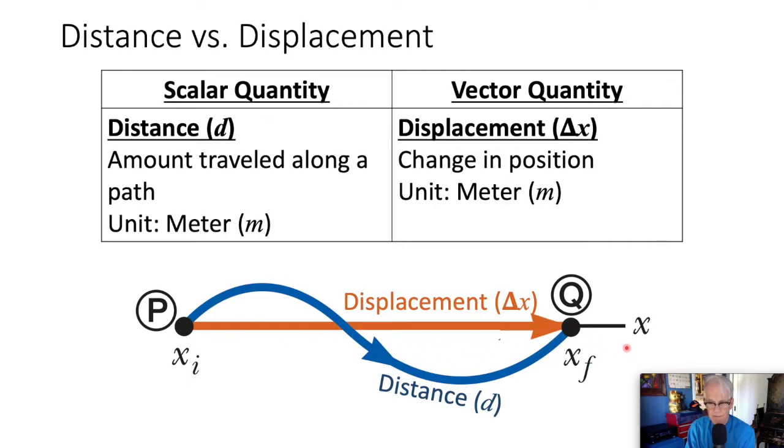Sometimes the magnitude and the displacement are the same. If we travel in a straight line from point P to point Q, the magnitude of the displacement and the direction would be the same. And notice that the unit is the same for displacement also.